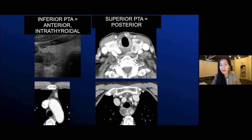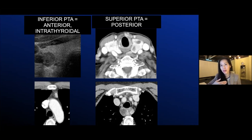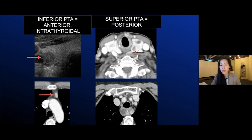The difference between a superior and inferior gland is not the cranial-caudal location, but actually the anterior-posterior location. The superior glands are typically posterior to the tracheoesophageal groove, and the inferior glands are anterior to the tracheoesophageal groove. Here are two examples: ectopic locations within the thyroid are typically an inferior gland; anterior in the superior mediastinum is also typically an inferior gland; and posterior in the neck, posterior to the tracheoesophageal groove — with the esophagus here — that's typically a superior gland.